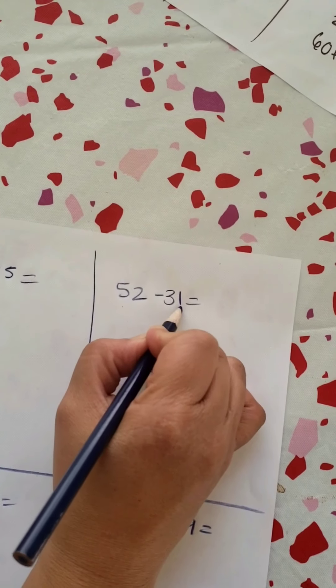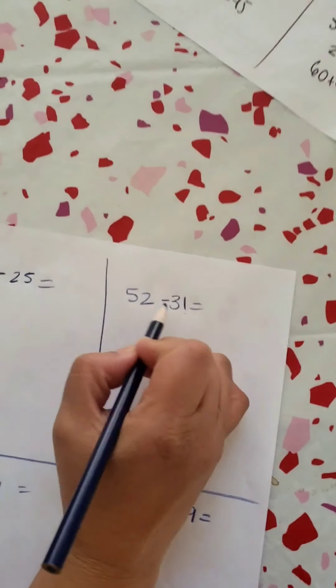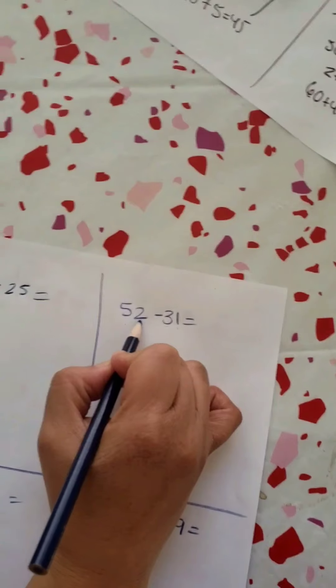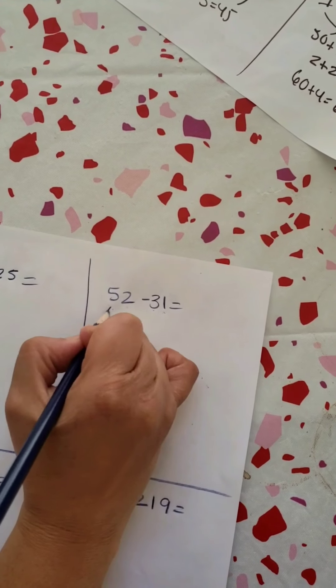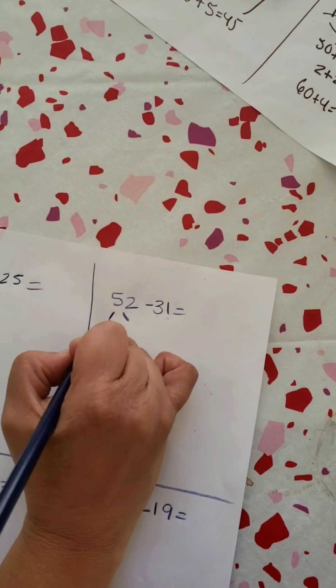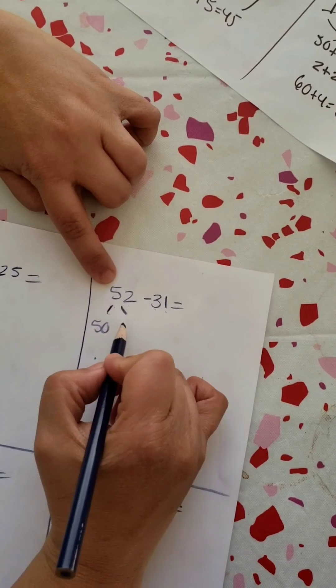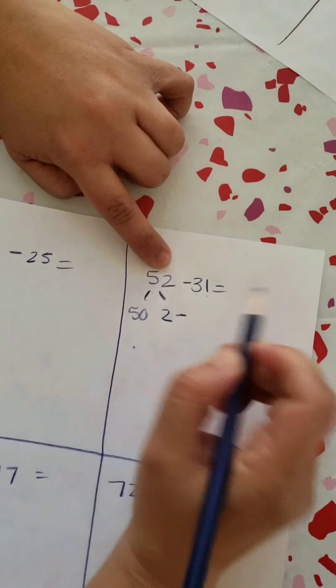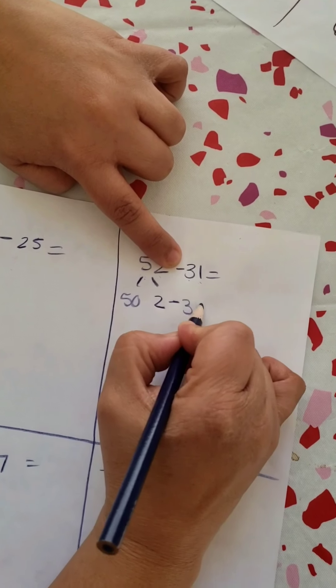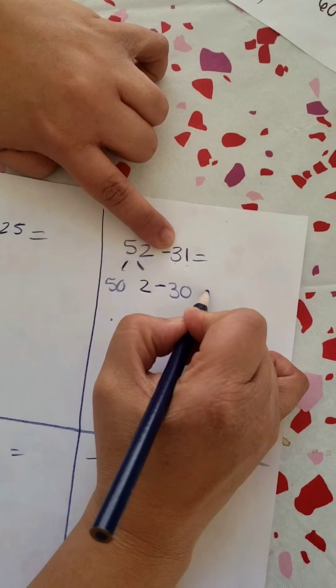We know that 52 minus 31. I'm going to look at the problem. I know that my tens is greater than my other tens, and I know my ones here is greater than my other ones place, so there should be no regrouping there. So all I'm going to do is I'm just going to go to 50, which is I know it's 50 and 2 because I have 5 tens and 2 ones, subtract 3 tens, which is 30, and 1 ones.